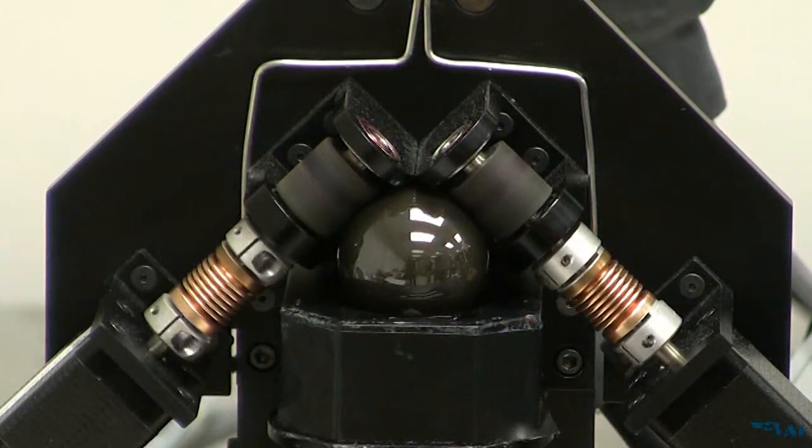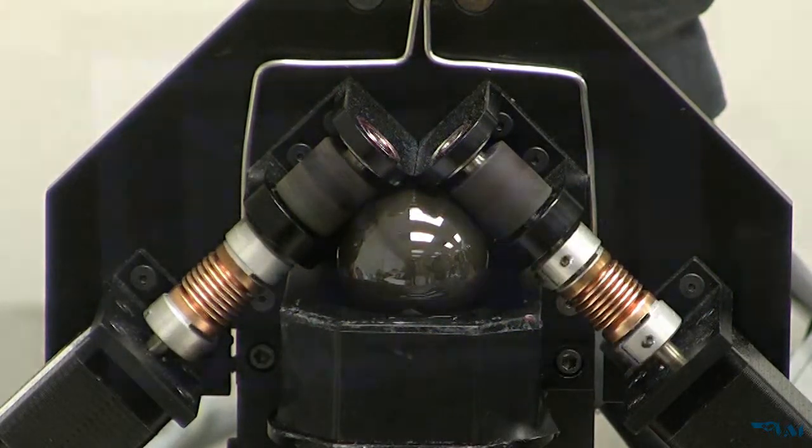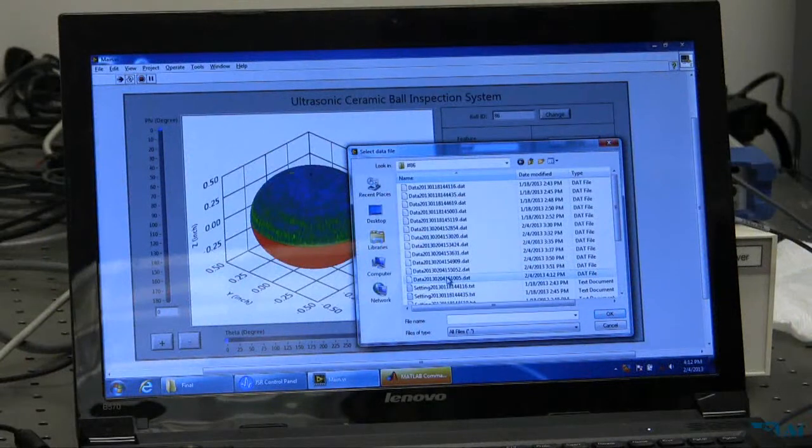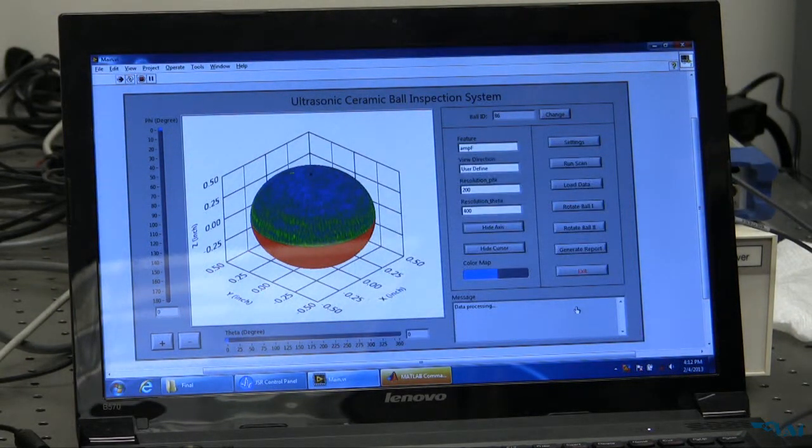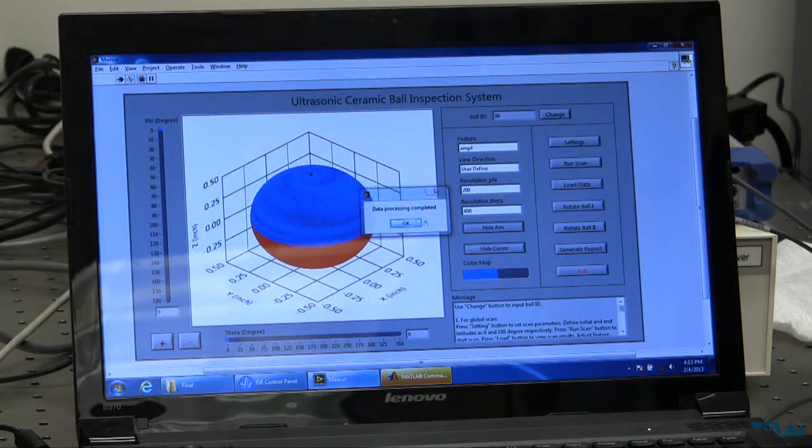The ball is driven by two friction wheels along a spiral trajectory. When the scan is completed, click the Load Data button and select the raw data file to perform signal processing. A 3D image of the scanned region is shown in the main interface.